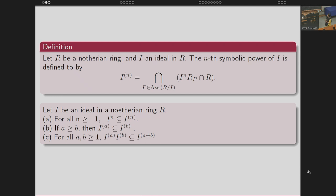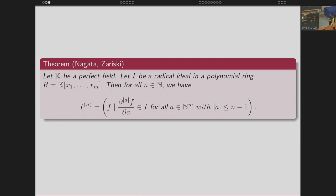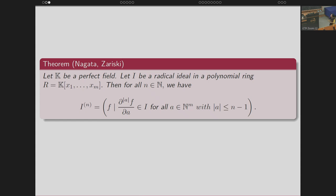Why is the symbolic power important? That is because of a theorem by Nagata and Zariski, which gives a geometric importance to symbolic powers. They proved that if you have a perfect field and I is a radical ideal in a polynomial ring, then the N-th symbolic power is the collection of all polynomials which vanish up to order N along the variety of this ideal. That is why symbolic powers capture more information than ordinary powers.